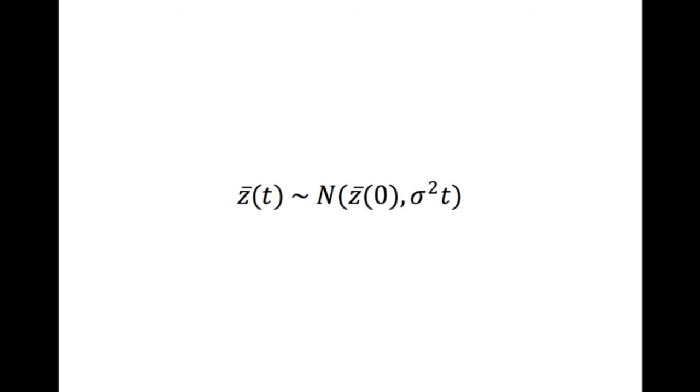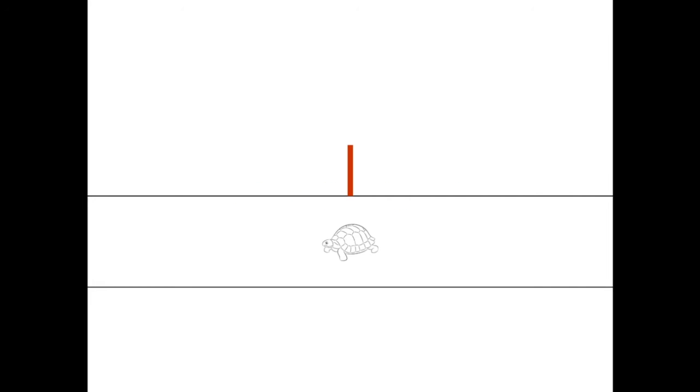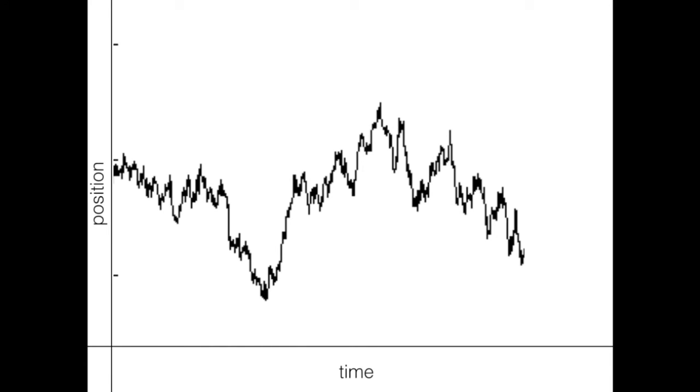And then the variance of that normal distribution depends on two things: t, time, so the longer of the time we wait, the wider our distribution gets. That makes sense. And sigma squared. And sigma squared is the parameter that controls what people usually refer to as the rate of our random walk, the rate of Brownian motion. To understand that better, we can take our line where we've been plotting our tortoise position and make that the y-axis of a plot, that would be position, and make the x-axis time. And then we can make a plot that actually tracks the position of our tortoise through time. So this is what our random walk looks like along the y-axis over some time interval.